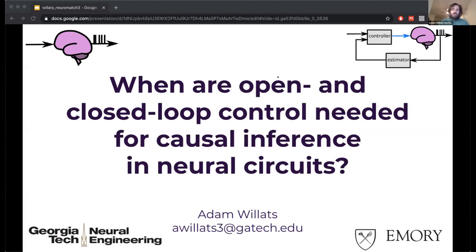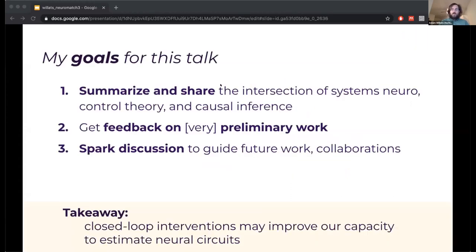Hello everyone, I'd like to talk today about open and closed loop control and what role they might play in causal inference for neural circuits. I haven't done this style of interactive talk before, so I wanted to make it clear what my goals are for this short talk. I want to summarize a little bit about the intersection of systems neuroscience control theory and causal inference. I want to show you some very, very preliminary work that's ongoing, and most of all, I really want to spark some discussion about future work in this field and gather everyone's inputs on that.